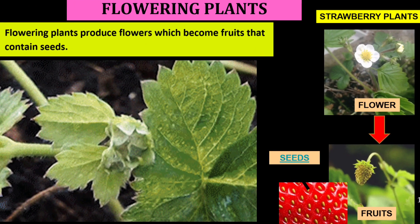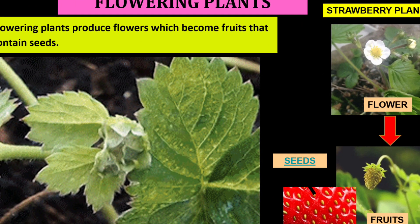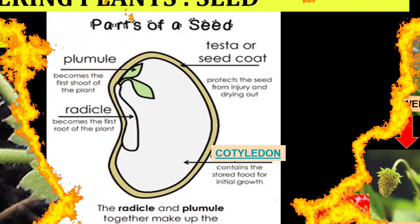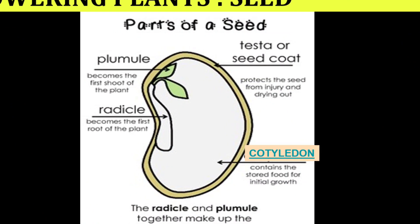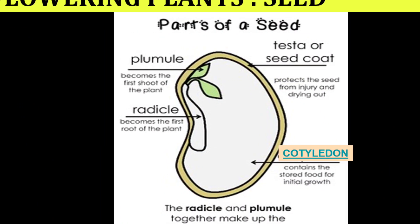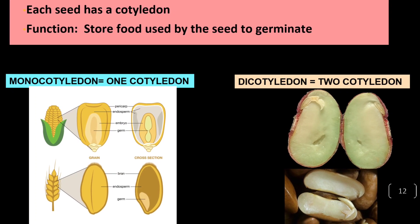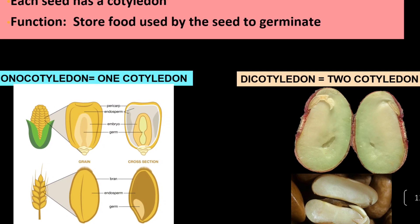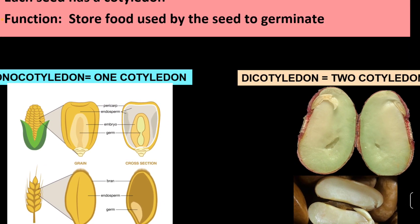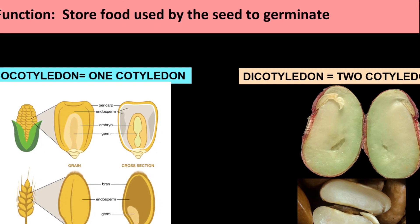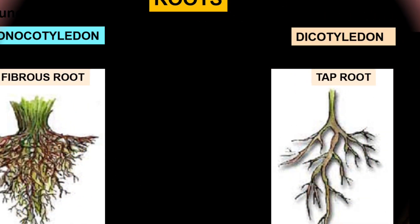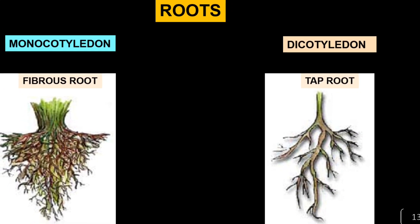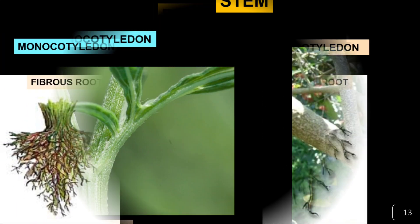Flowering plants are plants that produce flowers, which will become fruits that contain seeds. We are going to discuss the parts of a seed, which is called cotyledons. There are two types: monocotyledons, which consist of one cotyledon, and dicotyledons, which consist of two cotyledons. Their function is to store food during germination. The difference in roots is that monocots have fibrous roots and dicots have tap roots.